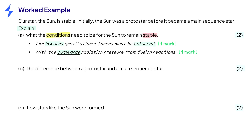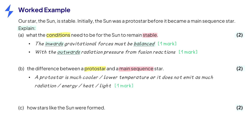Part B asks us to explain the difference between a protostar and a main sequence star. A main sequence star is defined by its stability from fusion reactions, whereas a protostar can be defined by its lack of fusion reactions. So we can say a protostar is at a lower temperature, or that it does not emit as much radiation, due to the fact it is not hot enough yet for nuclear fusion reactions to take place.